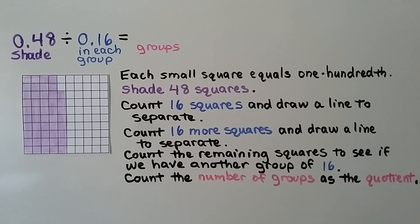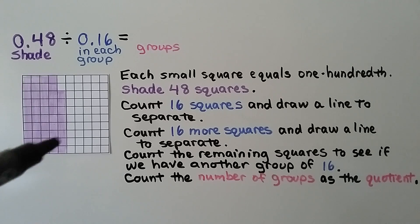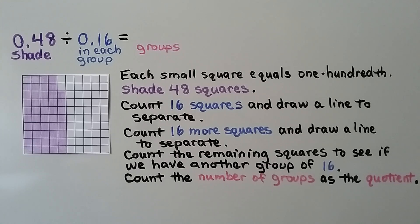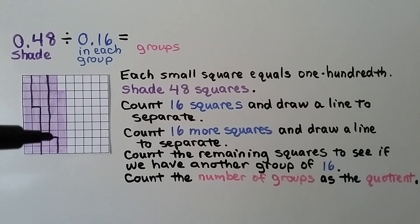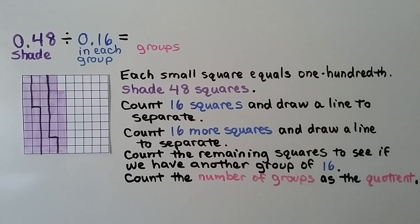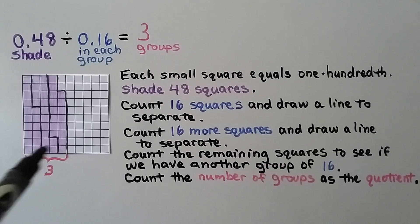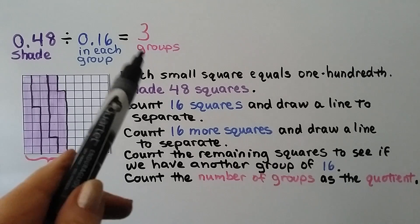Now we have 48 hundredths divided by 16 hundredths. Each small square equals 1 hundredth, so we shade 48 of them. We count off 16 squares and draw a line to separate them — that gives us 1 group of 16. We continue until we have 3 groups of 16 hundredths. It's equal to 3.